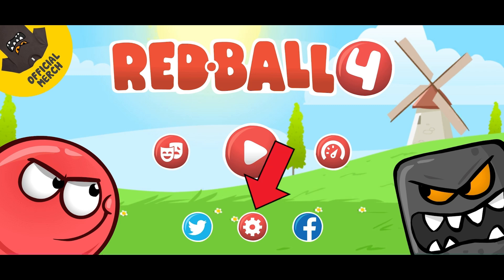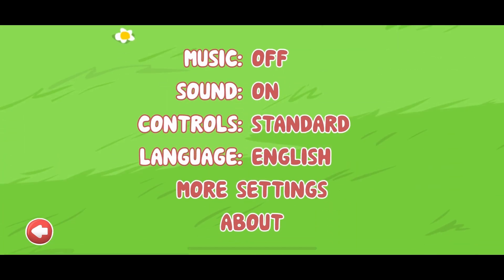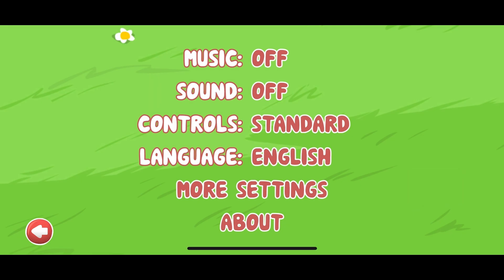Tap on the settings option from the bottom of your screen. Here you can see the sound option — simply tap on it and turn off the sound. And this is how you can turn off sound on Red Ball 4.